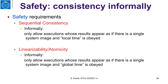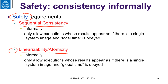Observe that the consistency conditions we just described are safety requirements or safety properties. Sequential consistency is a safety property, which gives a constraint on traces — it allows executions or traces whose result appears as if there is a single system image and the local time on each process is obeyed. Similarly, linearizability is a safety property that allows executions whose result appears as if there is a single system image and they obey the global time order.